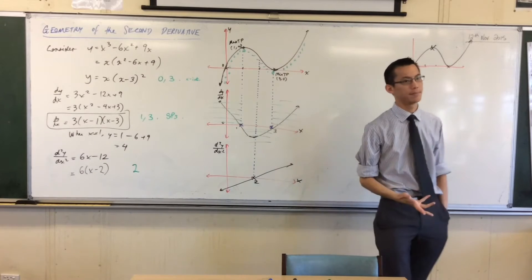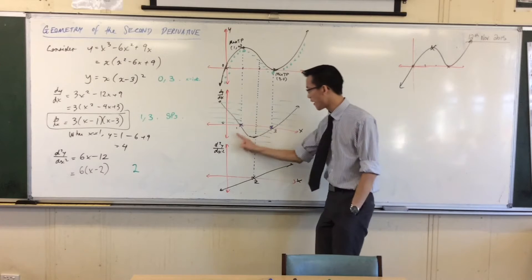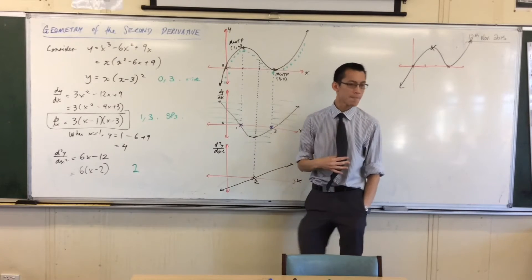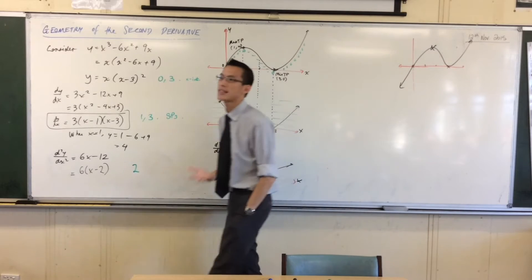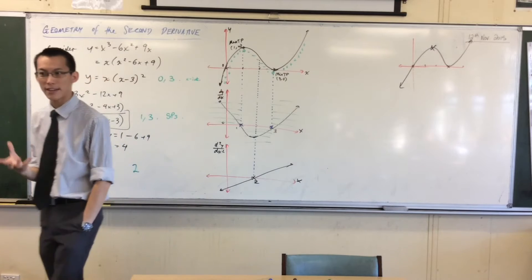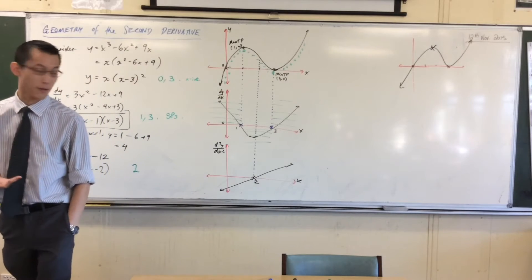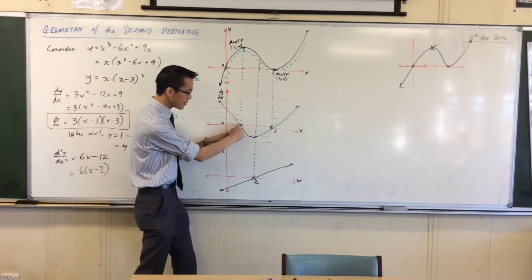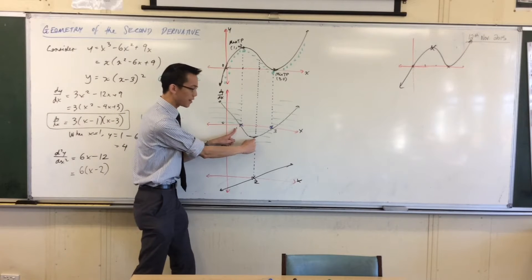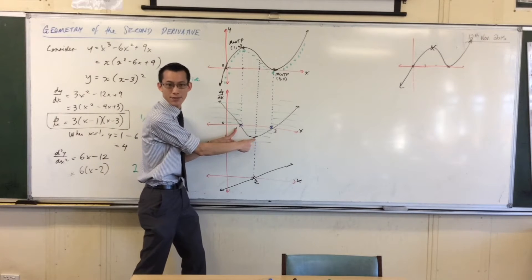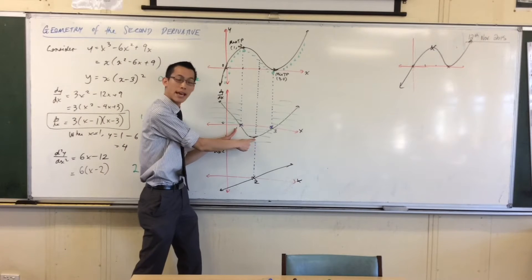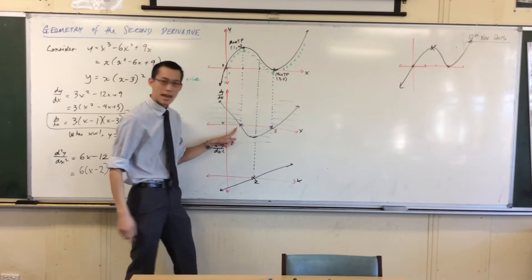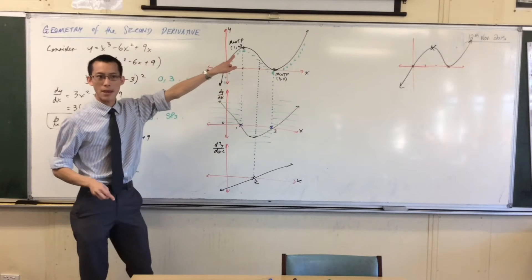the graph is decreasing — you notice that — and that corresponds to the fact that down here the first derivative is negative. But it's not the same negative; the type of negative does change. For instance, down here this is the most negative the derivative gets — that's the lowest it goes, it's the minimum. Now, geometrically, what does that mean up here?